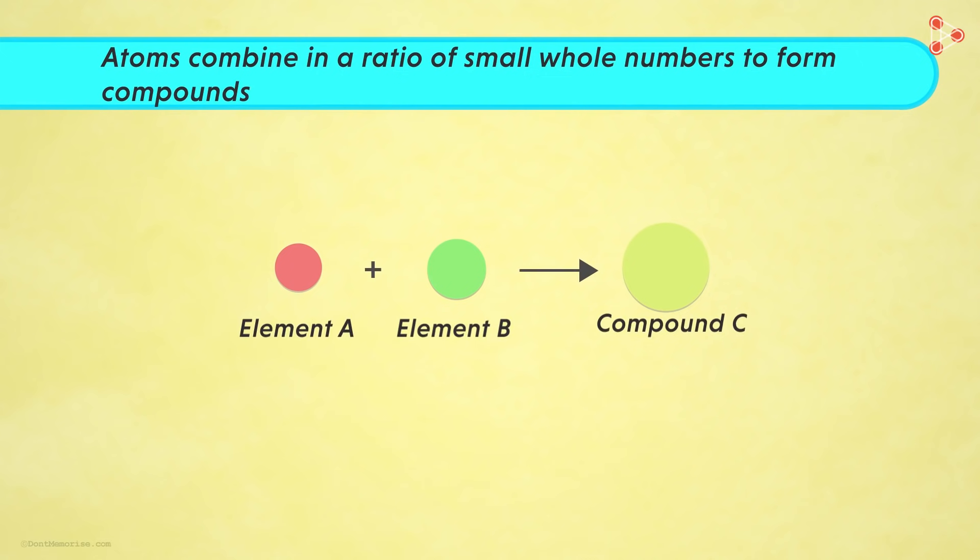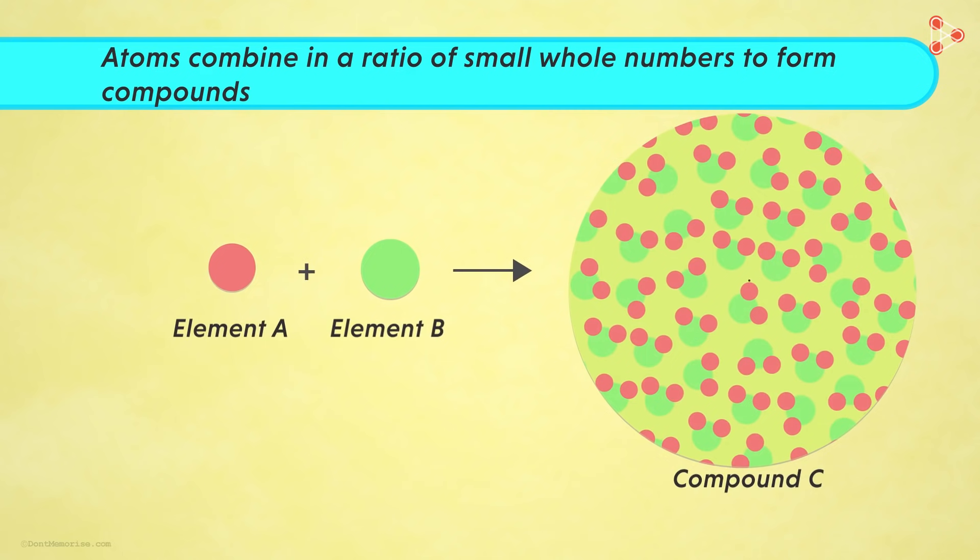The fifth postulate states that atoms combine in a ratio of small whole numbers to form compounds. Now what do we mean by this? In this chemical reaction, we find elements A and B reacting and giving us the compound C. If we observe well, a unit of compound C has two atoms of element A and one atom of element B. Right? So aren't these whole numbers?